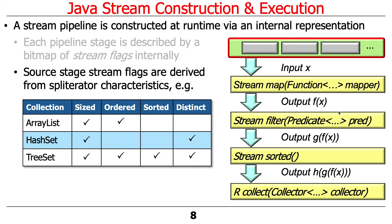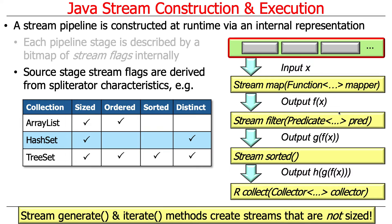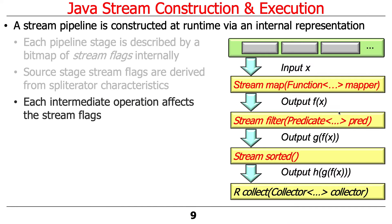When we start out, the splitterator says something about the data. There are factory methods for creating streams that will create streams that are not sized. Generate and iterate are stream factory methods that create streams that are not sized, because we don't know in advance how big they're going to be. They'll typically be bounded using something like limit, find first, or similar operations.